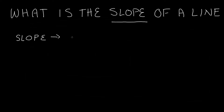It describes how steep the line is — the steepness of the line. It also describes whether the line increases as it goes to the right, or decreases as it goes to the right. The slope can also define whether the line is flat or vertical. So the slope is going to tell us how steep the line is, and whether it increases, decreases, stays perfectly flat, or is straight up and down.